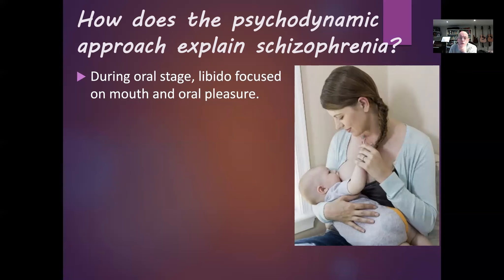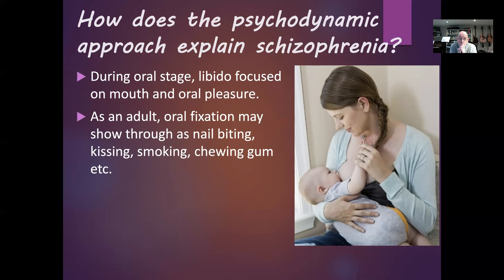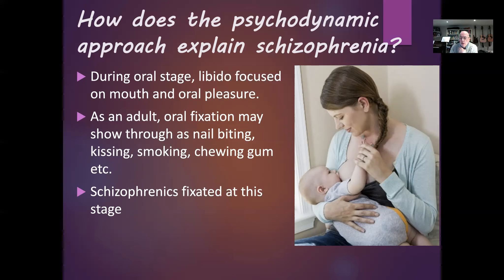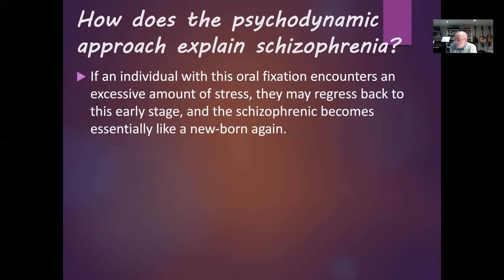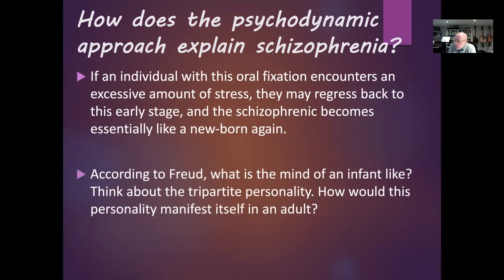According to Freud, during the oral stage the libido is focused on the mouth and oral pleasure. Adults can get oral satisfaction in many ways — kissing, smoking, chewing gum, eating, and so on. But according to Freud, someone with schizophrenia has been fixated at that stage. If someone is fixated at the oral stage and then experiences a great deal of stress in their life, they might regress back to the oral stage and function basically like a baby again, because at the oral stage the only part of the personality present is the id.